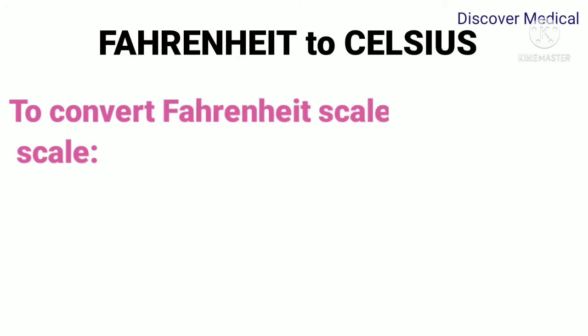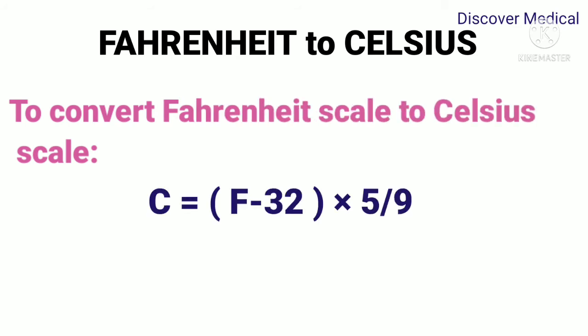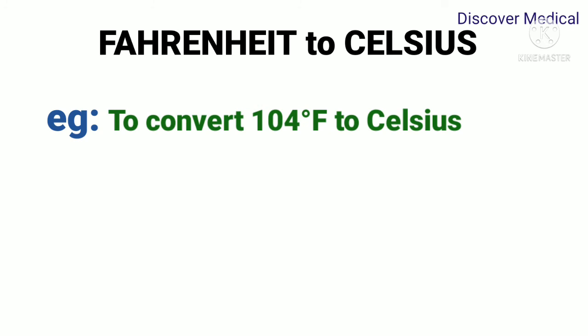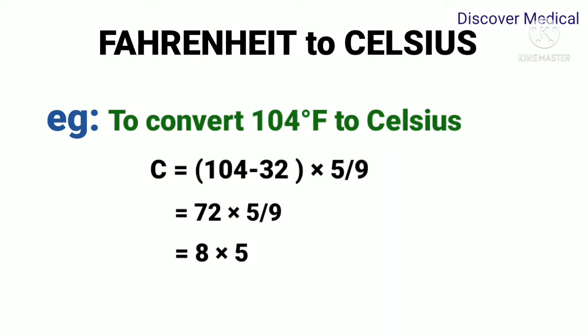Then let's see how to convert Fahrenheit scale to Celsius scale. We have the formula: Celsius equals Fahrenheit minus 32 times 5 by 9. For example, to convert 104 degrees Fahrenheit to Celsius: C equals 104 minus 32 times 5 by 9. We got the value 40 degrees Celsius.